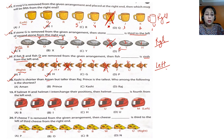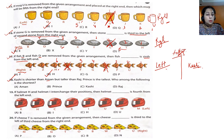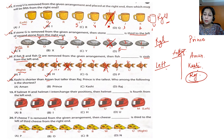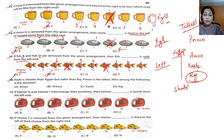Question 18: Kashi is shorter than Aman but taller than Raj. So if we arrange by height — taller ones go up — Aman is above Kashi, and Raj is below Kashi. Prince is the tallest, so Prince goes to the top. Looking at the order, Raj is at the bottom — the shortest. The answer is D, Raj.